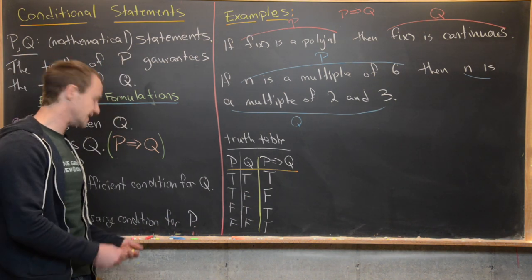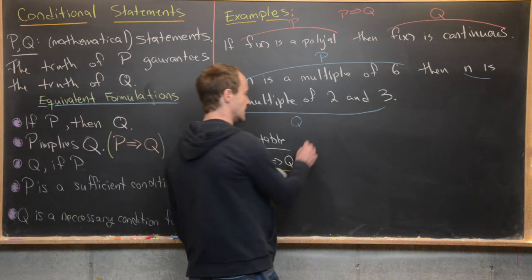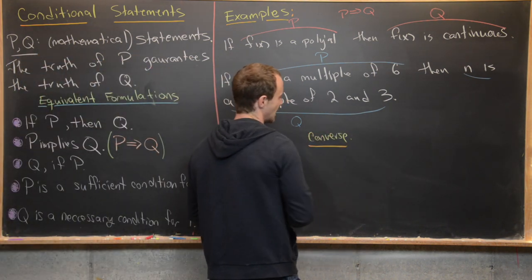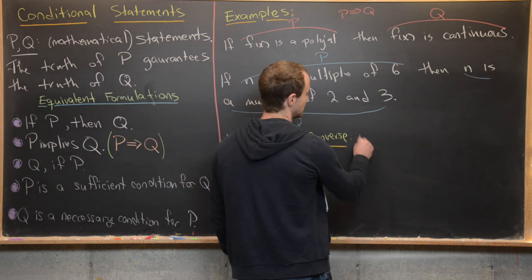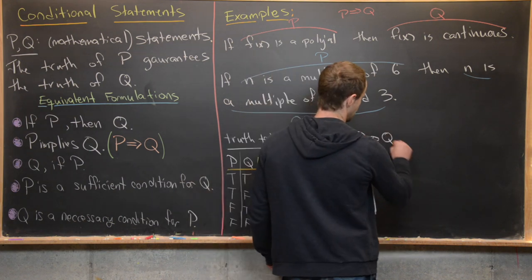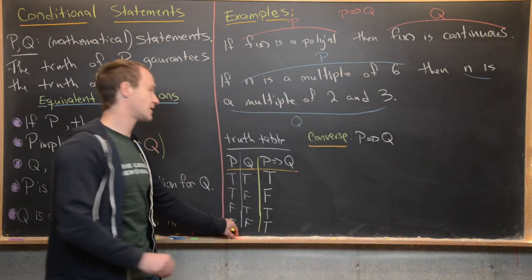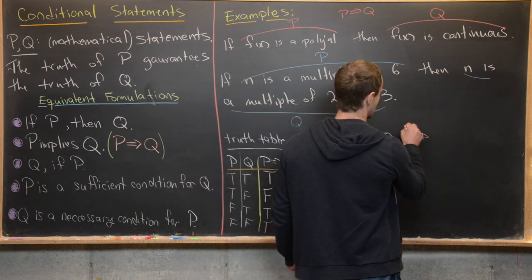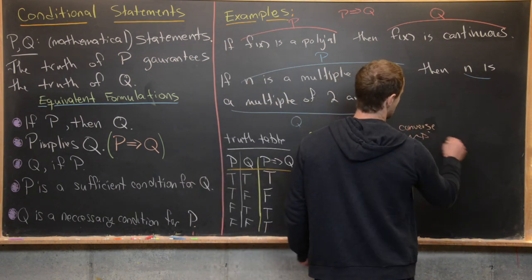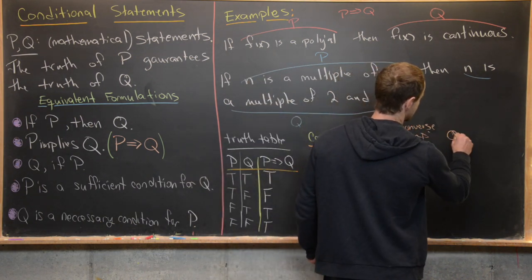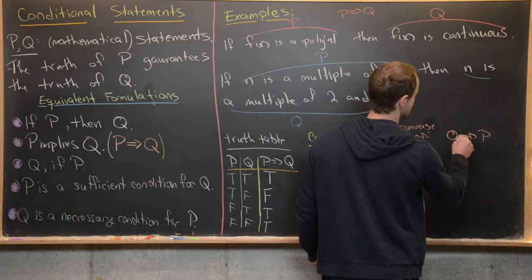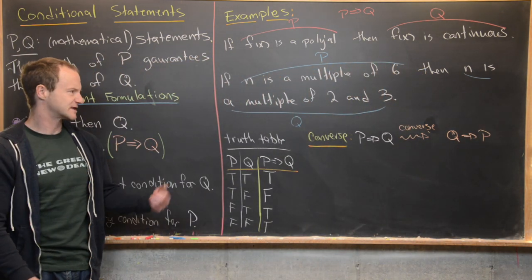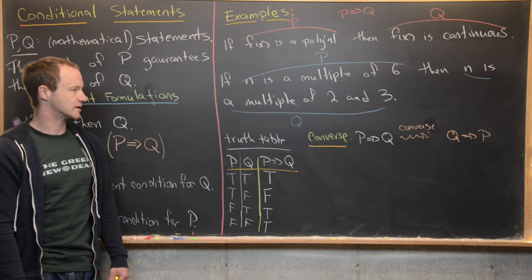Next, let's talk about the converse. The converse of P implies Q turns into Q implies P — it just changes the direction of the arrow, as if we're going in the opposite direction.